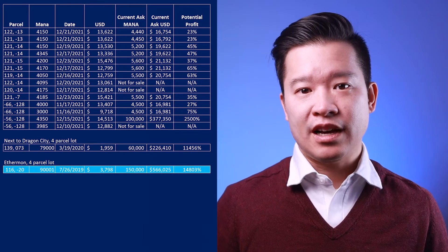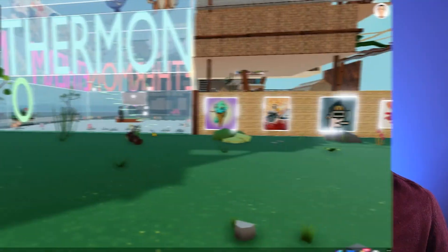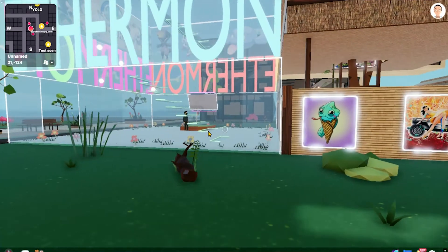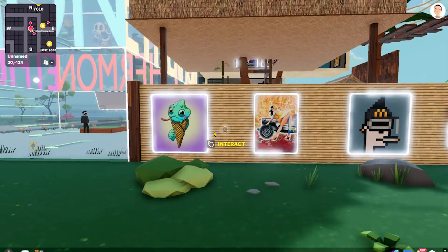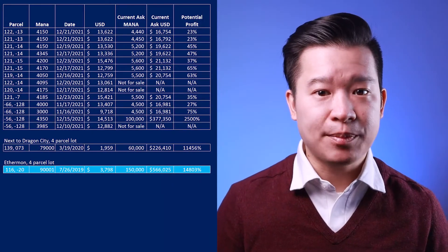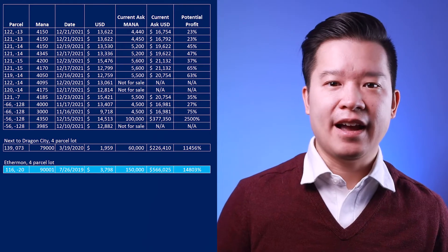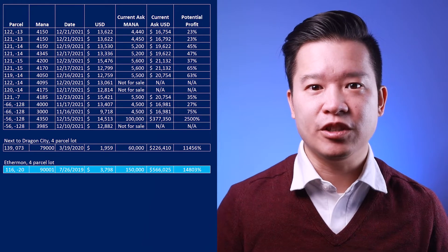Let's take a look at another four parcel lot over here called Ethermon. It's asking a pie-in-the-sky price of 150,000 mana or $566,000 US dollars, and the seller bought it all the way back in July of 2019 for 90,001 mana, but mana was only four cents back then, so the owner only paid $3,800 for it. If they get their ask, they'll make a healthy 14,000% return.